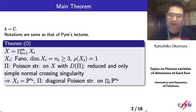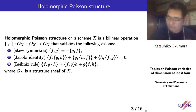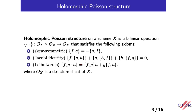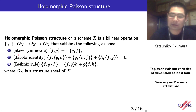D_pi is the degeneracy divisor. This is the most important object in Poisson geometry. Now we review basic terms and define the degeneracy divisor. A holomorphic Poisson structure on a scheme X is a linear operation O_X cross O_X to O_X that satisfies three axioms: skew symmetry, the Jacobi identity, and the Leibniz rule.